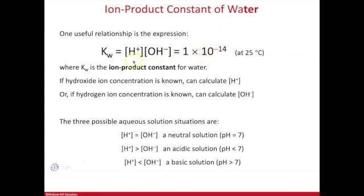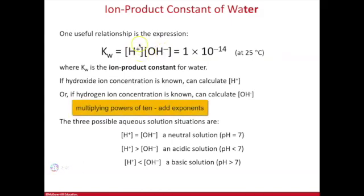What this means is you can use this equation to calculate one concentration. If you know the hydrogen concentration, you can calculate the hydroxide. If you know the hydroxide concentration, then you can calculate the hydrogen. When you are multiplying powers of 10, you add the exponents.